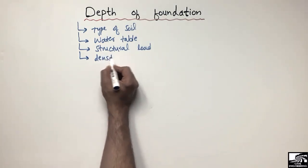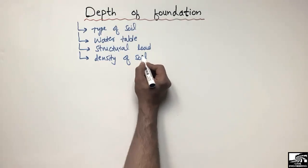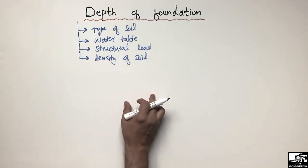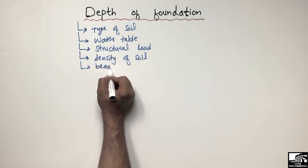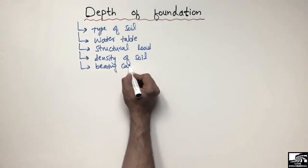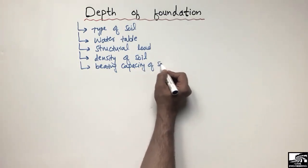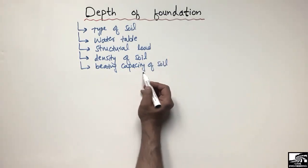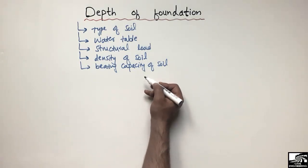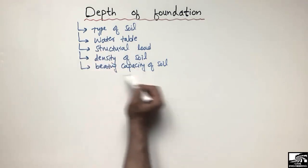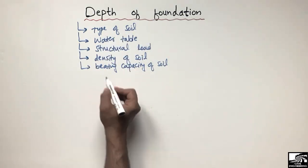The other factors are the density of soil — the higher the density of soil, the less will be the depth of foundation. Also, the bearing capacity of soil: by using soil with high bearing capacity, we will be required to provide a lower depth of foundation. So these are the factors which affect the depth of foundation.